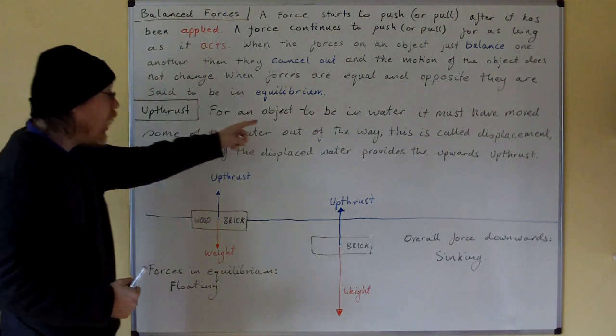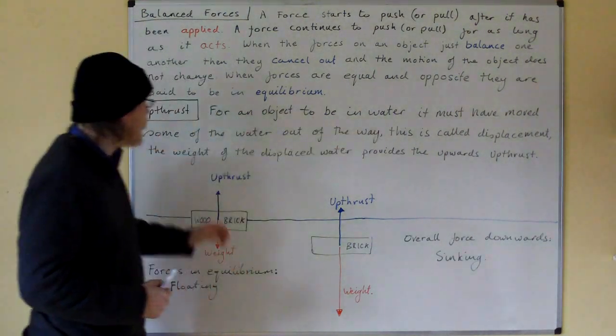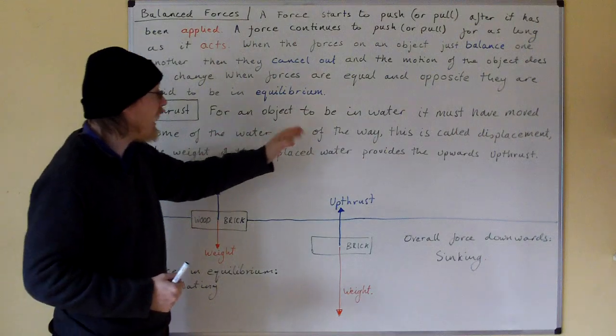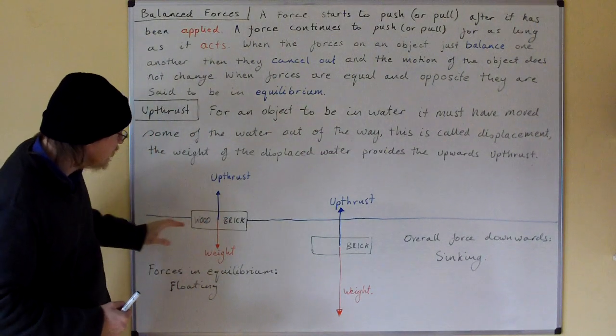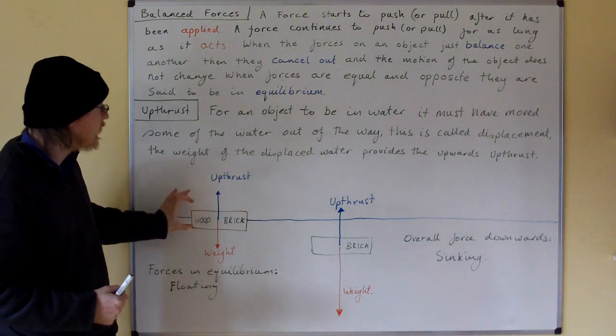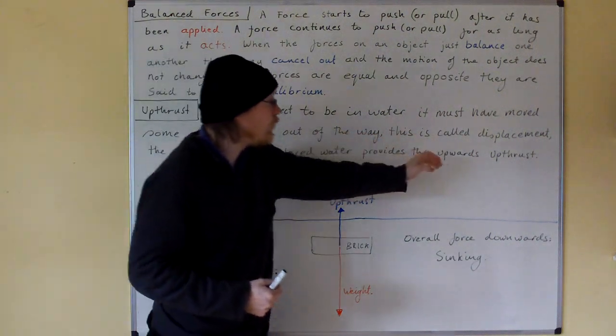Upthrust. For an object to be in water, it must have moved some of the water out of the way. So here our brick is in water and it's moved some of the water out of the way for the brick to be there. This is called displacement.